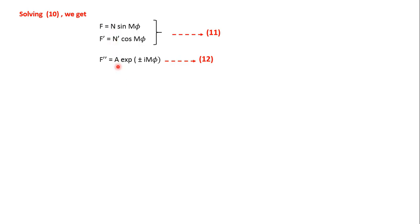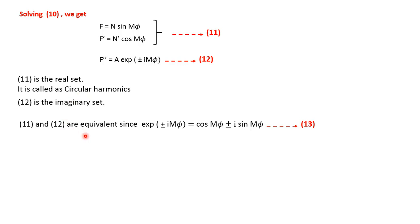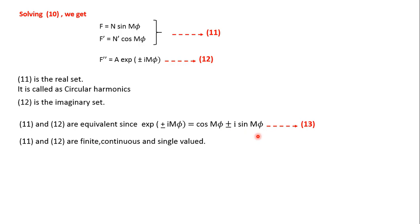N, N′, and A are normalization constants. These two sets of solutions are equivalent, since e^(±imφ) = cos mφ ± i sin mφ by Euler's formula. The solutions f and f′ are finite, continuous, and single-valued. Only when these three conditions are obeyed do we say the function is an acceptable solution.